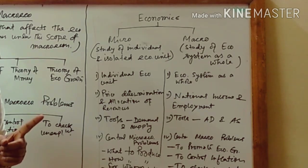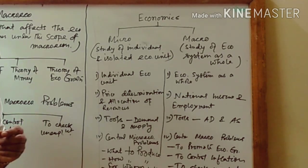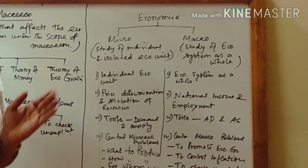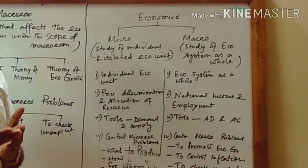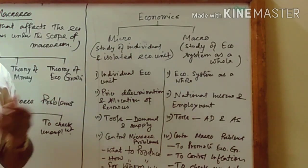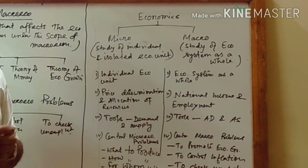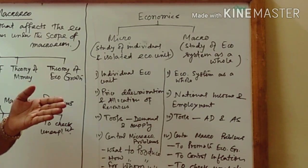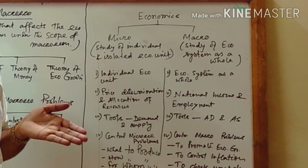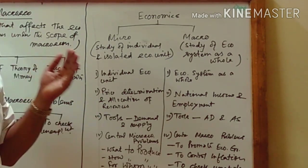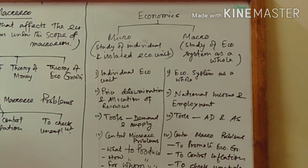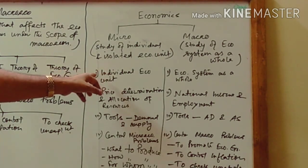For example, national income — we are talking about the income of the economy as a whole. Poverty is not about only one individual; it is about the whole country. Then again we have inflation, which is also a macroeconomic problem, where we are talking about a rapid and continuous increase in the general price level. Here also we are talking about the economic system as a whole.